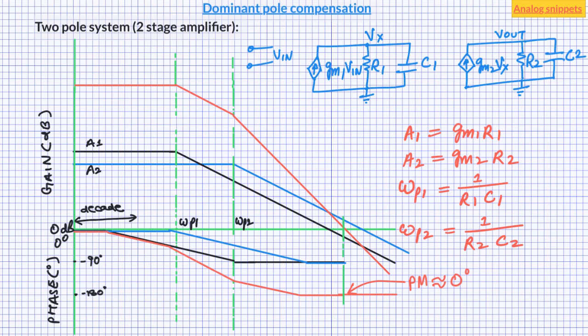Now let's say we want to change this system to make the phase margin 45 degrees. Keep in mind that in a real design you probably want to keep the phase margin even higher, maybe 60 or 70 degrees. Here I am explaining the ideas using 45 degrees because for this phase margin, the unity gain frequency and second pole frequency are equal. In dominant pole compensation, one of the poles is moved in — that means the frequency of one of the poles, which is in most cases the lower pole, is reduced.